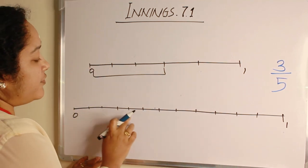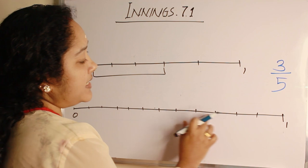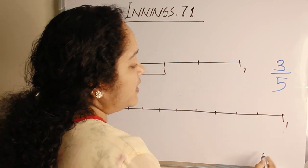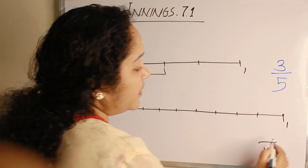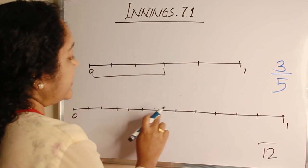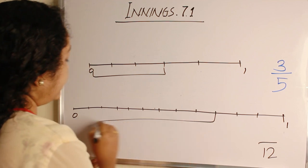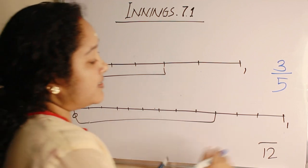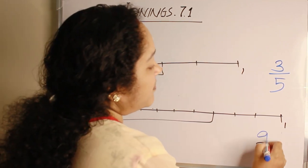1, 2, 3, 4, 5, 6, 7, 8, 9, 10, 11, 12. So the denominator is 12. Here is the marked part. 1, 2, 3, 4, 5, 6, 7, 8, 9. So the answer is 9 by 12.